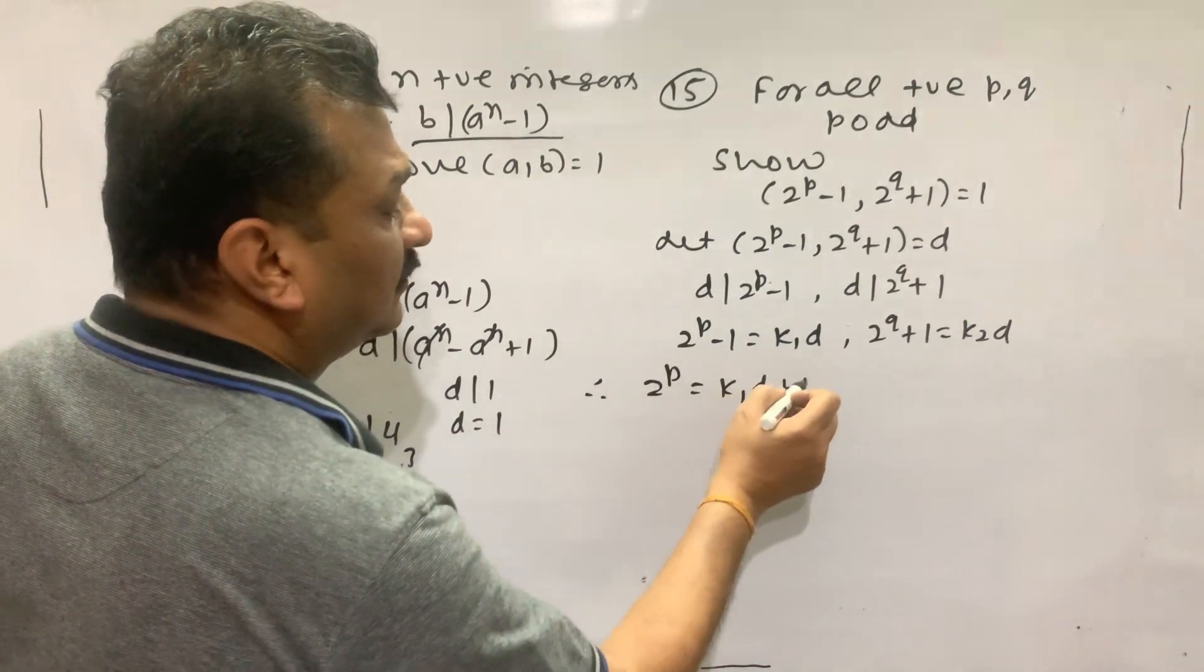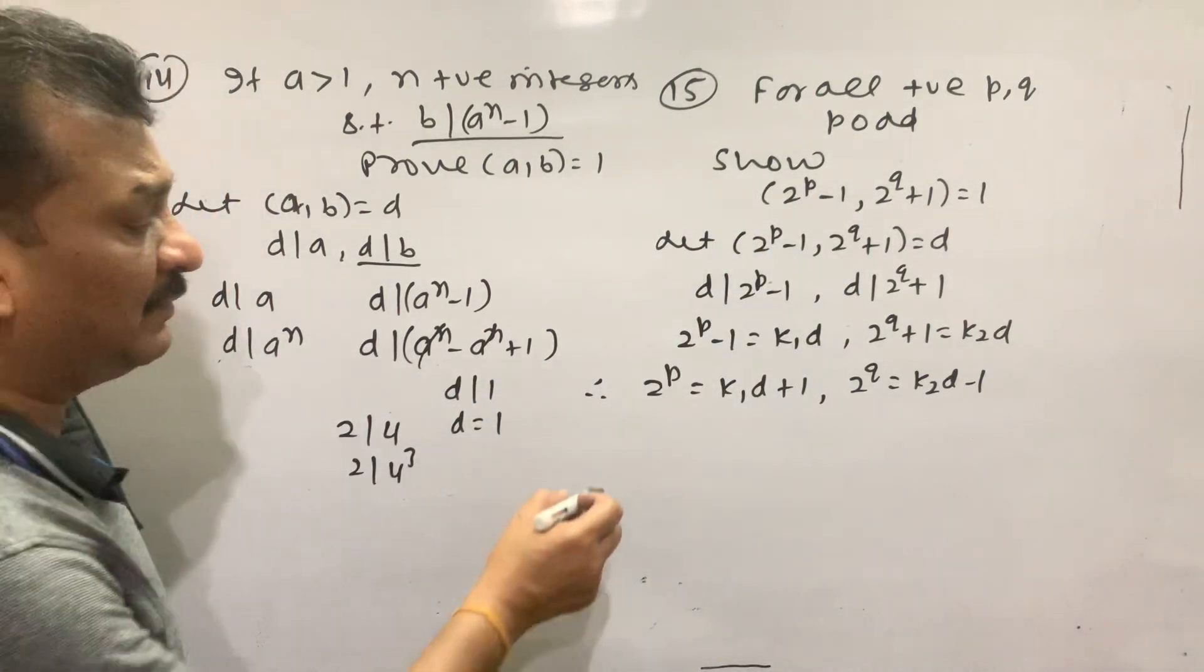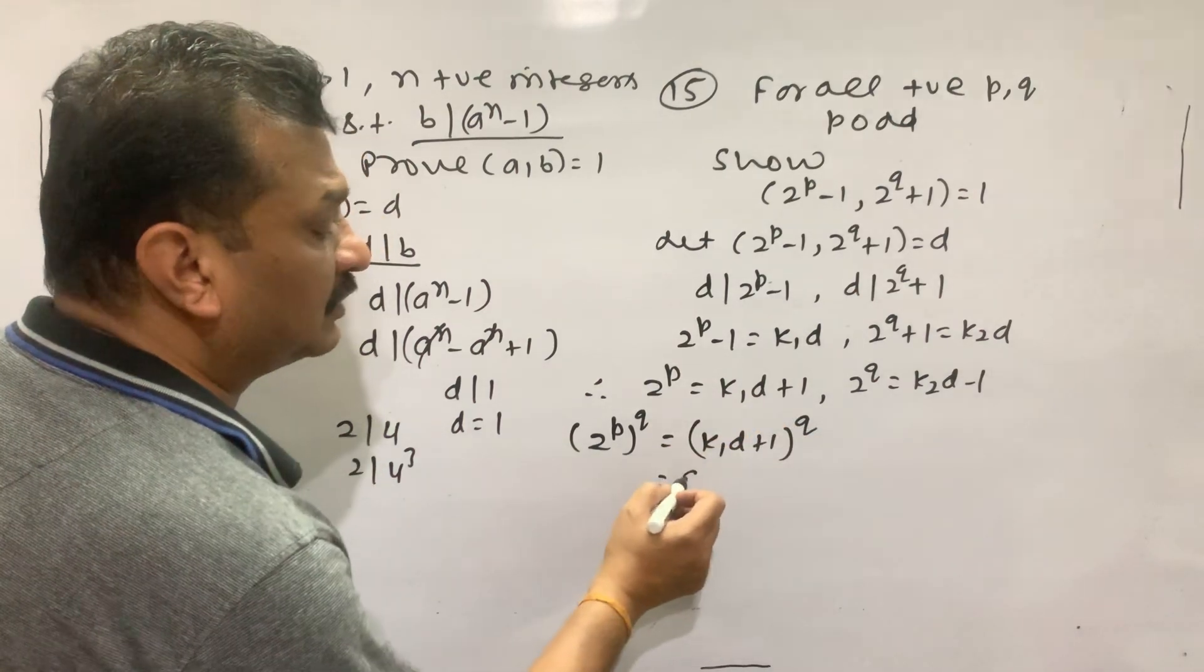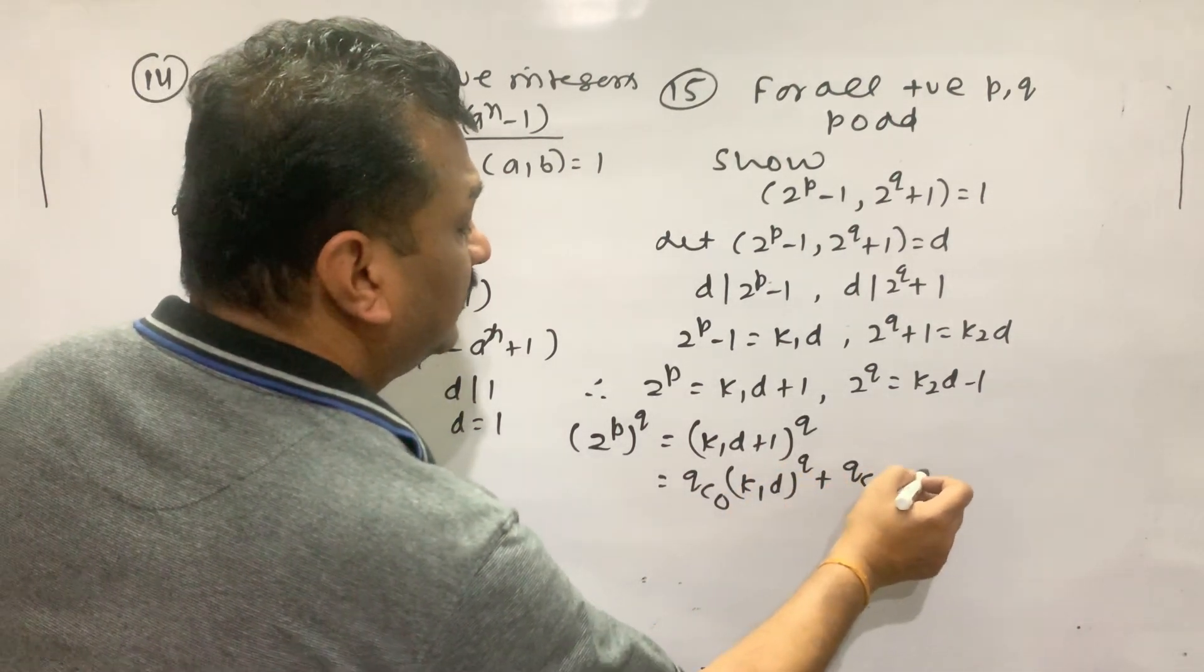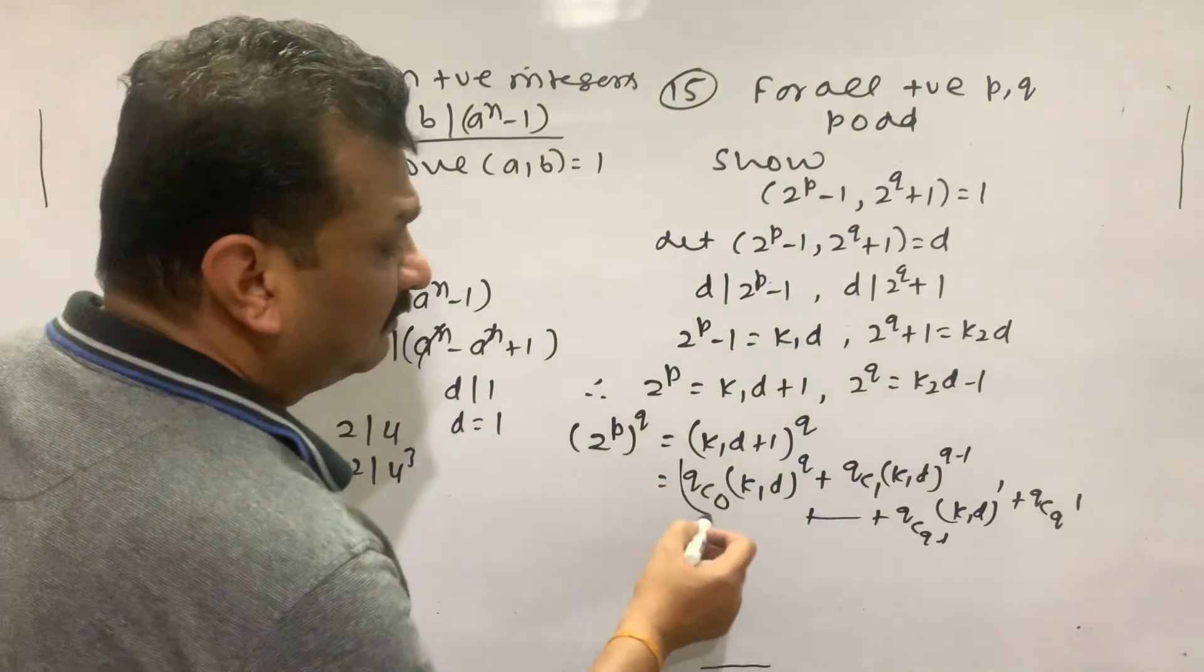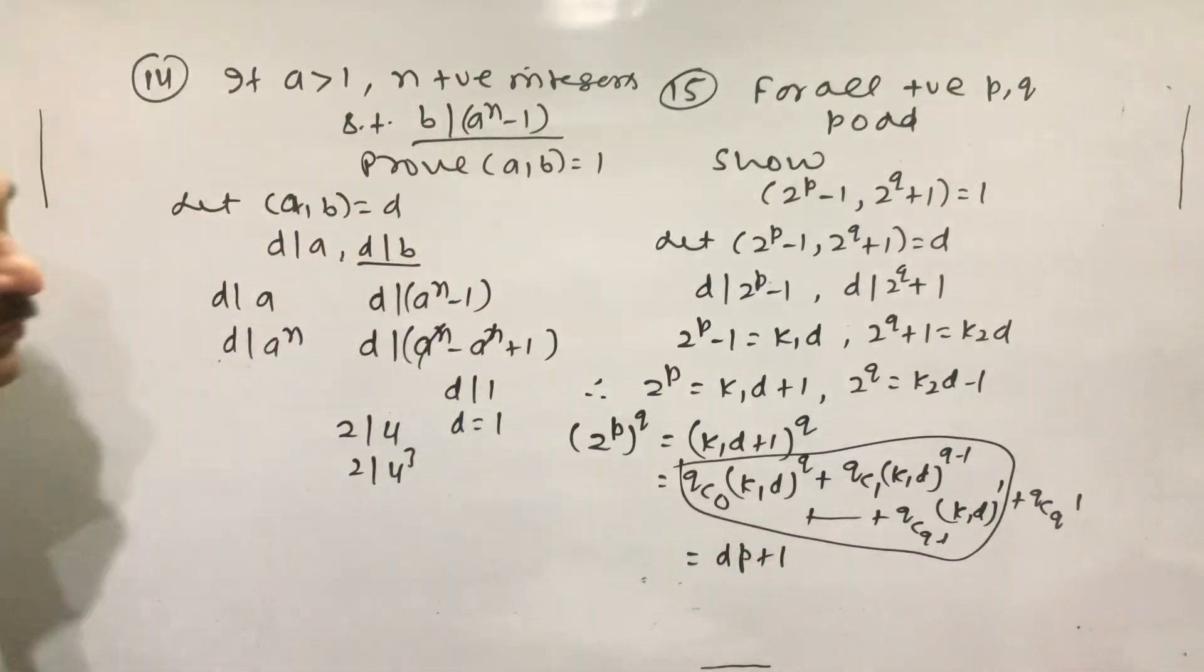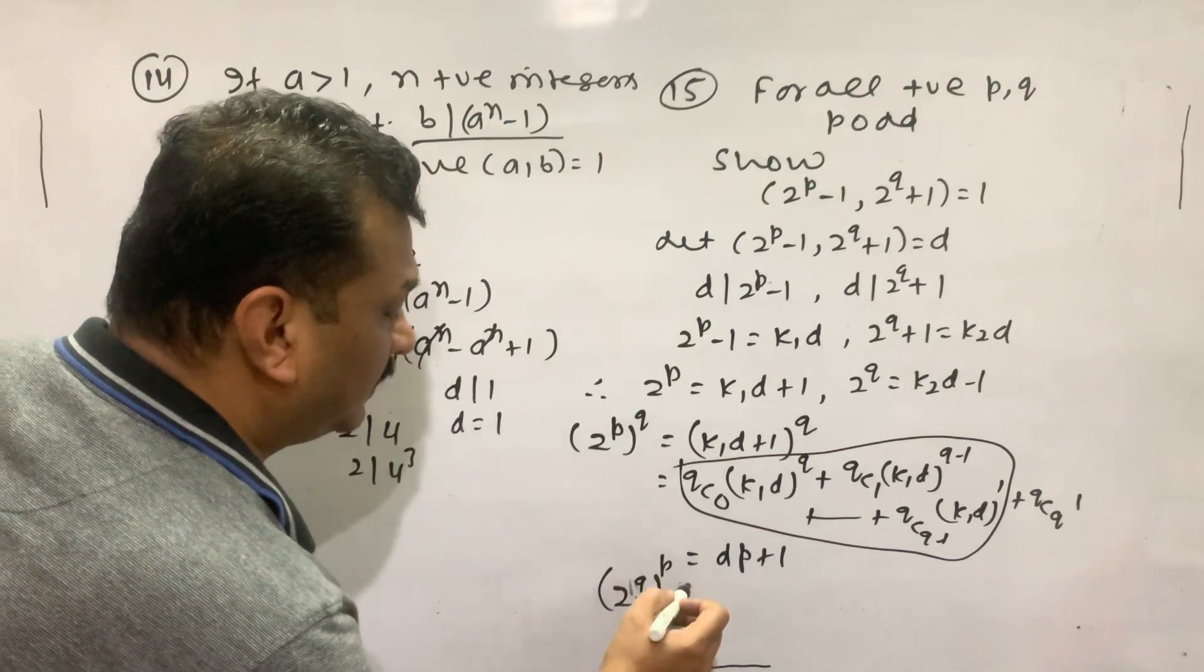Then 2 to the power p is K1·d plus 1, 2 to the power q is K2·d minus 1. I have to prove that the greatest power is 1. So I take both sides to the power q: K1·d plus 1 to the power q. By the binomial theorem: qC0 K1·d to the power q, qC1 K1·d to the power q-1, plus... qC(q-1) K1·d to the power 1, qC(q) to the power 2-p. Sorry, what is the power p?